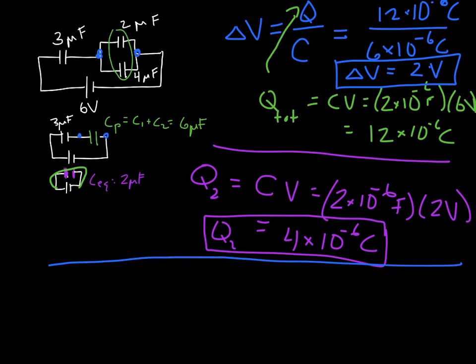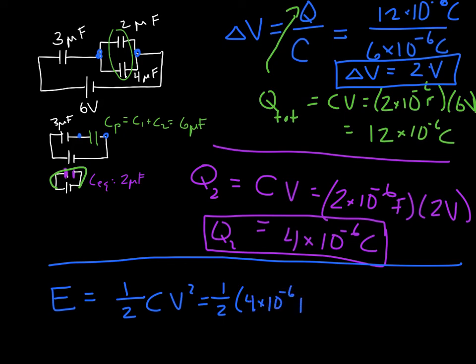Final calculation: find the energy stored in the 4 μF capacitor. We already know the voltage across it — 2 volts — because voltage in parallel is the same. Using the formula ½CV²: ½ × 4 × 10⁻⁶ × (2)² = 8 × 10⁻⁶ joules of energy stored.